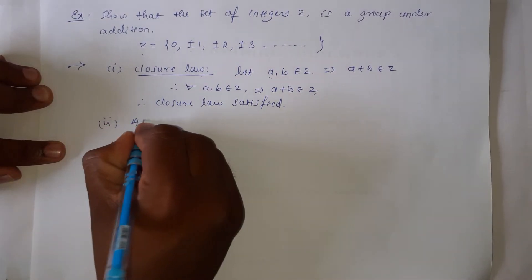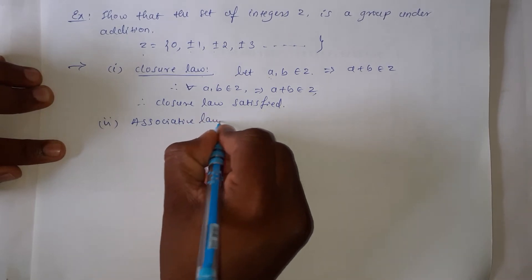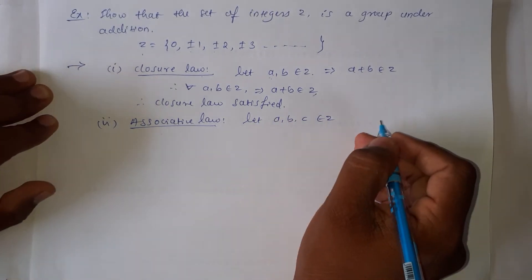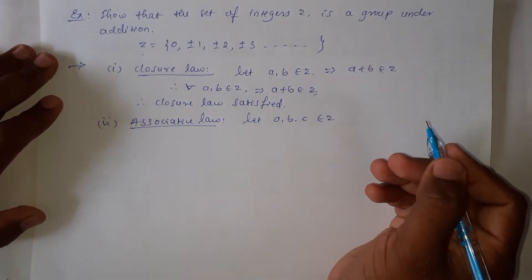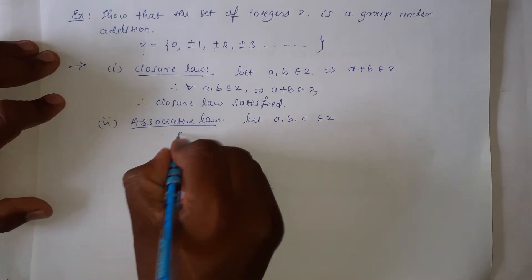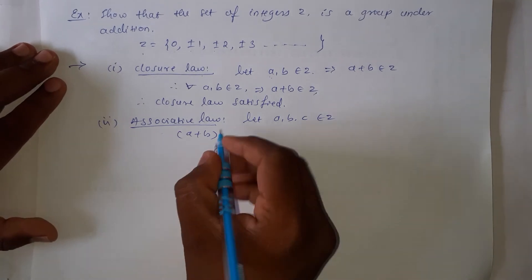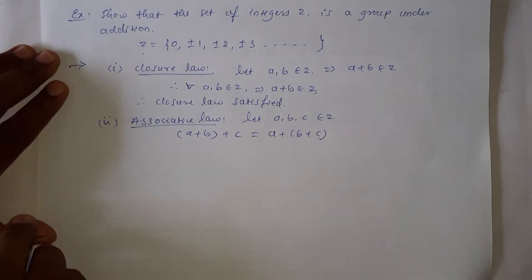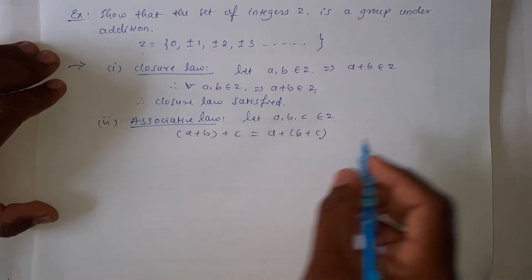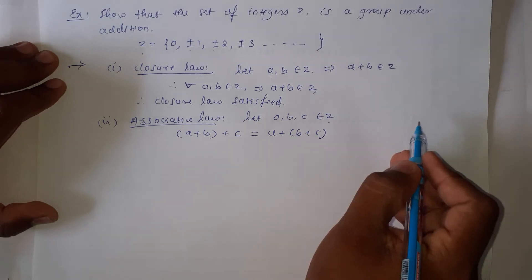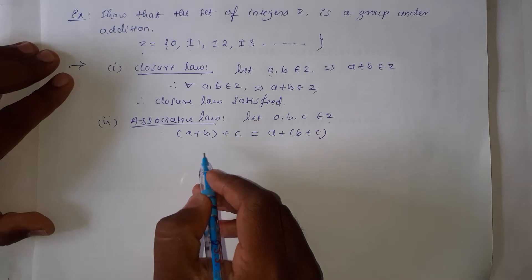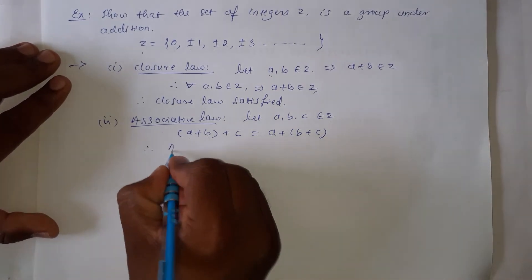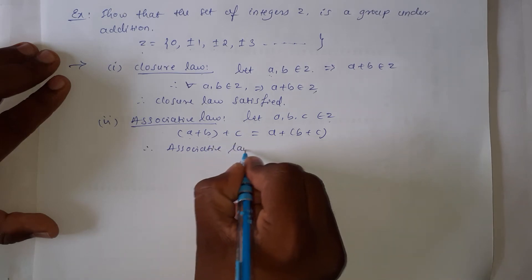The second law is associative law. Let a, b, c belong to Z. We know that addition is associative in nature: (a + b) + c is equal to a + (b + c). Therefore, associative law is satisfied.